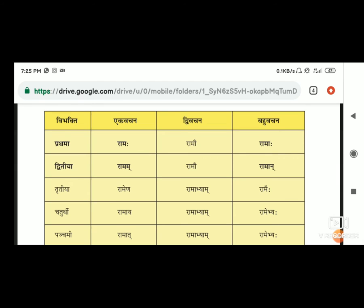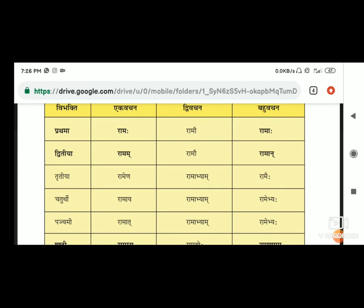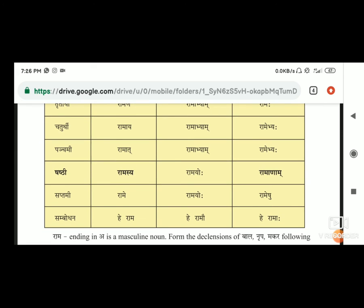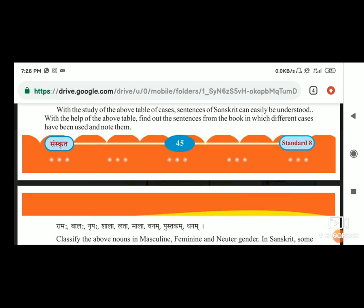First case - राम, वो वैसे का वैसा ही आता है. पहले singular देखते हैं. Second में आएगा 'म' जो कि half म होता है, जिसको गुजराती में कहते हैं खोडा - जो half होता है, उसके बाद कोई भी vowel नहीं लगता, वो consonant का consonant रहता है. Third - रामेण. Fourth - रामाय. Fifth - रामात. Sixth case - रामस्य. Seventh - रामे. और अगर sambodhan करना है तो - हे राम. यह vibhakti है.